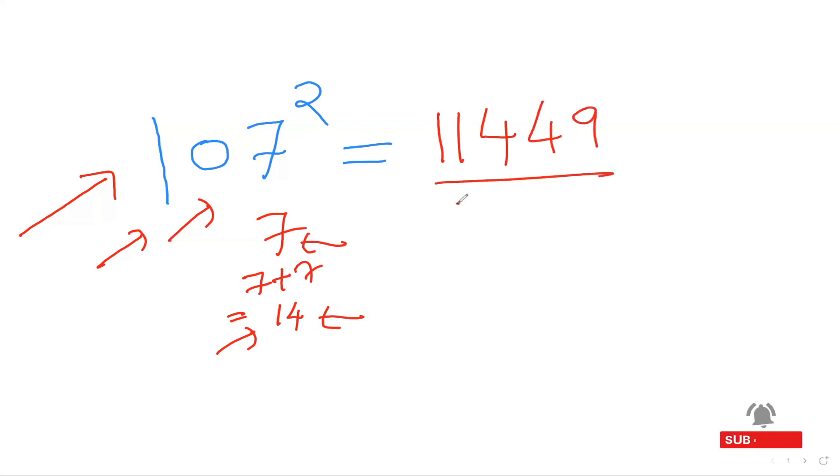So the cool thing is what you're going to do: the difference from 100 which is 7, 7 plus 7 is 14. The number is bigger than 100, so 100 plus 14 is 114. At the end, 7 square is 49.